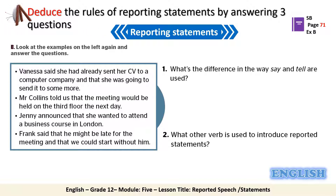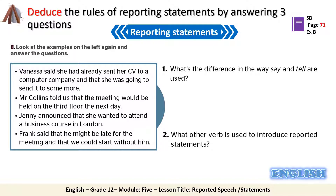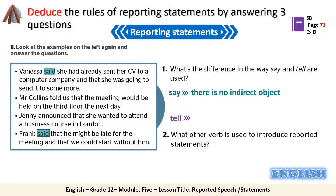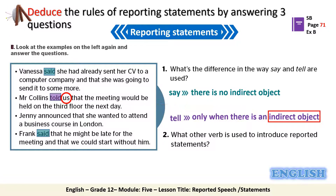Let's check it out. The first question asks you to spot the differences in the way the verbs 'say' and 'tell' are used. The verb 'say' is used in the past simple and is not followed by an indirect object. As for the verb 'tell,' it is also used in the past simple but it must be followed by an indirect object — like in the example 'Mr. Collins told us.'